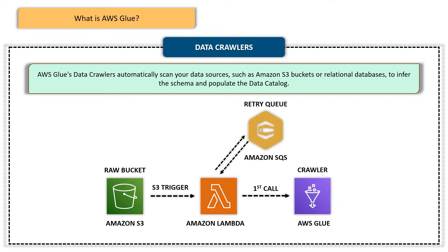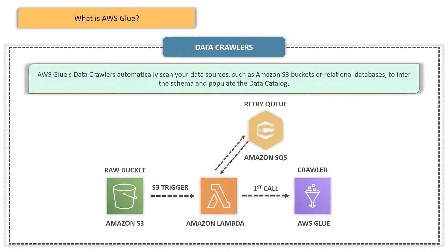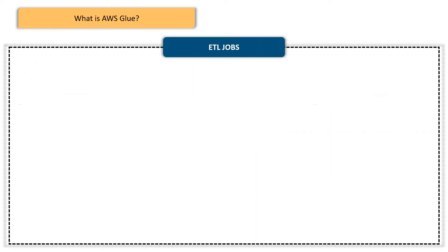The second feature is Data Crawlers. AWS Glue's data crawlers automatically scan your data sources — such as Amazon S3 buckets or relational databases — to infer the schema and populate the Data Catalog. Imagine the time you'll save by not having to manually define and update schemas for your ever-growing datasets. The data crawlers take care of the heavy lifting, leaving you more time to focus on analyzing data and extracting insights.